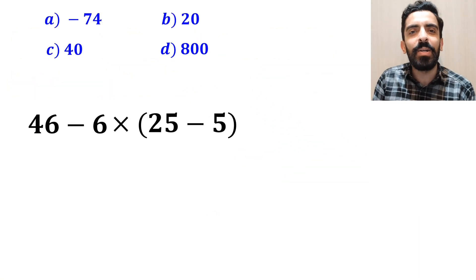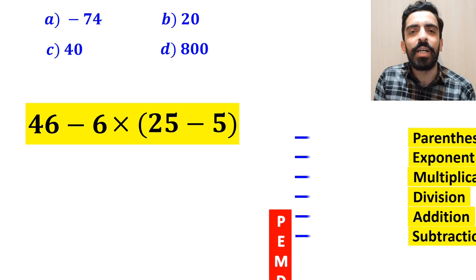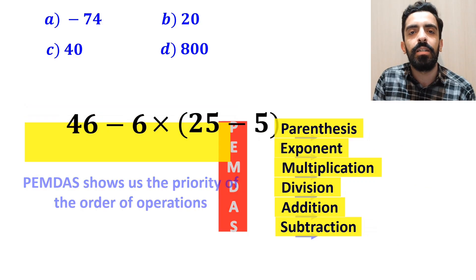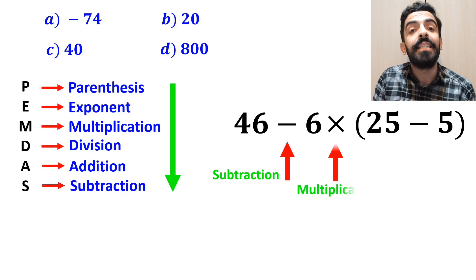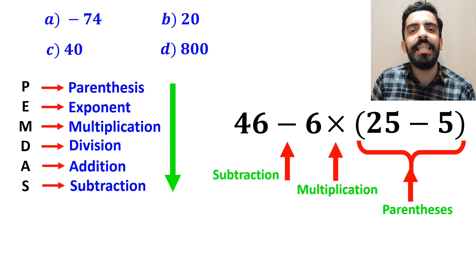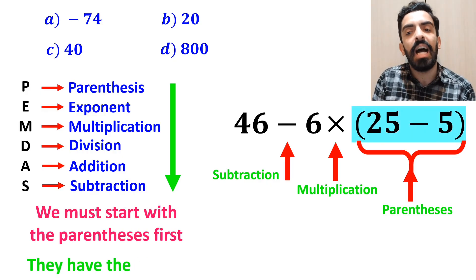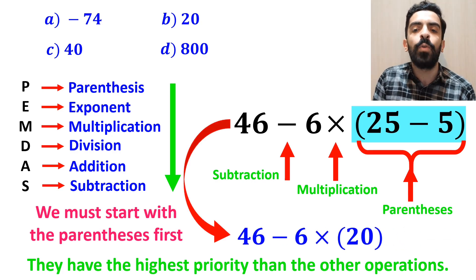Now let's go step by step and show you how to solve this expression properly. To solve this question, we need to follow the PEMDAS rule step by step, which shows us the priority of the order of operations. As you can see in the image, this expression has a subtraction sign, then a multiplication sign, and then parenthesis. We must start with the parenthesis first because they have the highest priority. So we rewrite this expression as 46 minus 6 multiplied by 20.